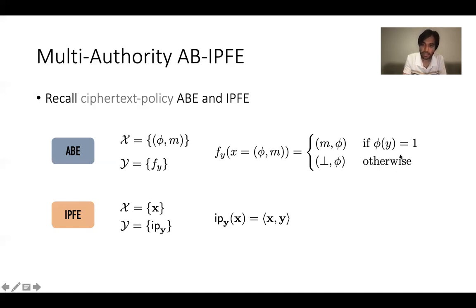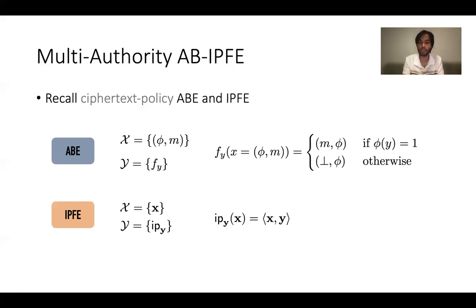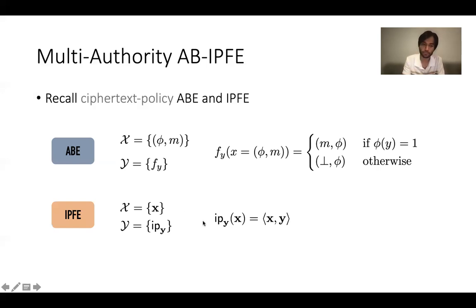In ABE there is a notion of fine-grained access: if you satisfy a predicate, then only you learn some information. In IPFE, you always learn some partial functional information about the underlying input space vector x. A natural question is: what happens if you combine ABE and IPFE?